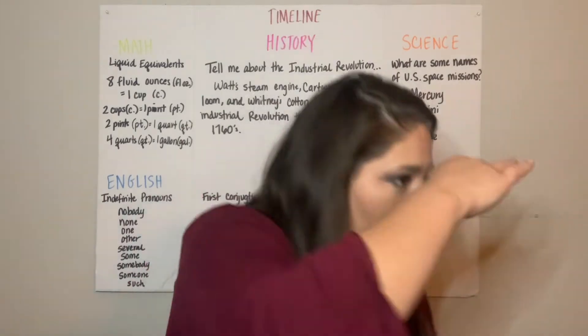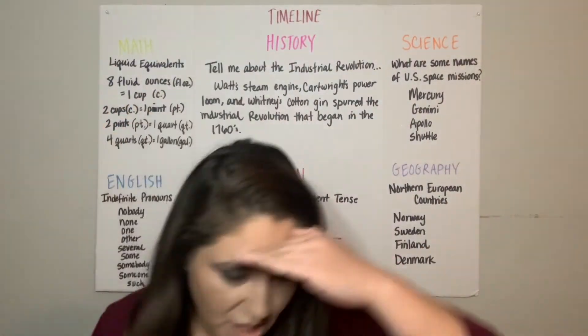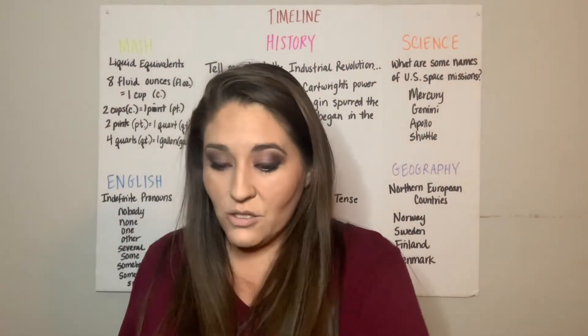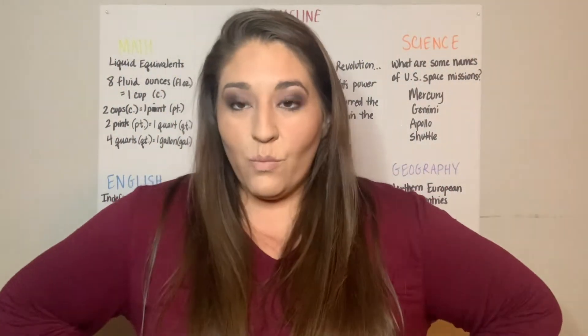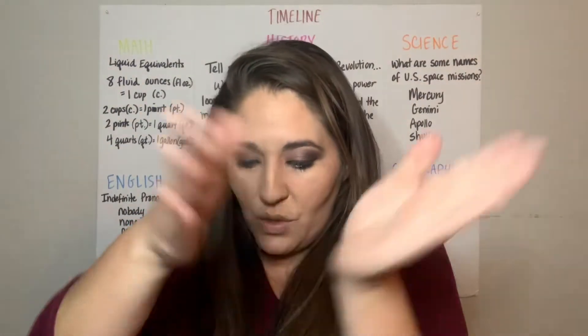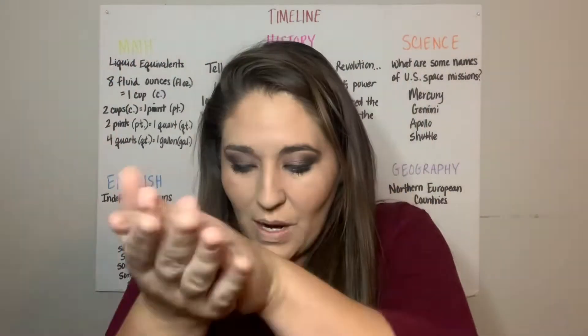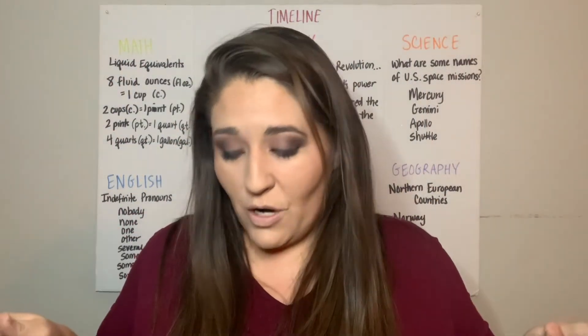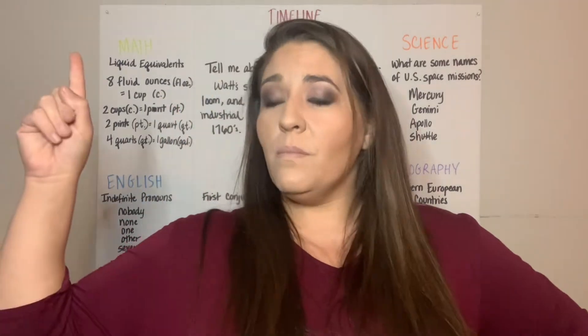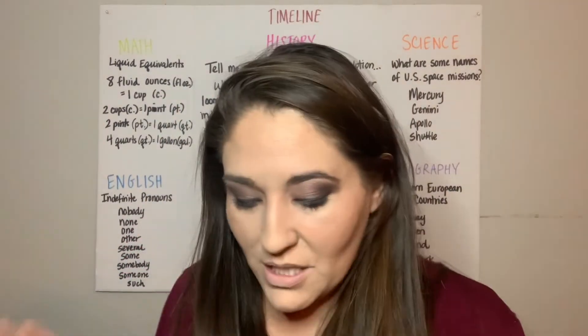The full timeline sequence: Age of Exploration, circa 1400 to circa 1600, Prince Henry's School of Navigation, Slave Trade in Africa, Gutenberg's Printing Press, Songhai in Africa, Ivan the Great of Russia, The Spanish Inquisition. And that was our timeline.